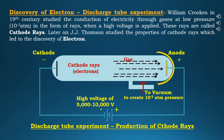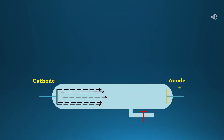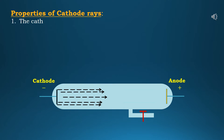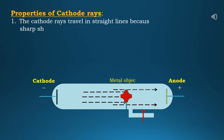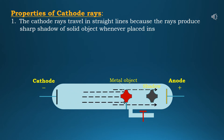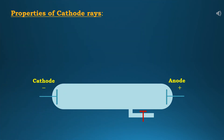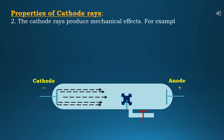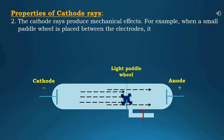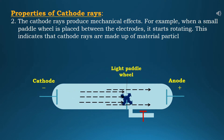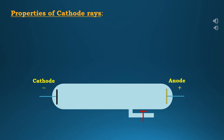The discharge tube is filled with a gas and the two electrodes are connected to a source of high voltage. When the pressure of the gas is decreased to about 10⁻² atmosphere, the gas becomes conducting and the discharge tube starts glowing. It was discovered that the glowing is due to the bombardment of the glass by certain rays emitted from the cathode. These rays were named cathode rays because they originate from the cathode. Now let's discuss the properties of cathode rays. First, cathode rays travel in a straight line because they produce a sharp shadow of a solid object placed inside the tube. Second, cathode rays produce mechanical effects — for example, when a small paddle wheel is placed between the electrodes, it starts rotating.